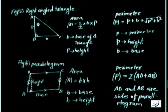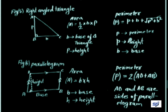The perimeter of a right-angle triangle is P = p + b + √(p² + b²), where the capital P is the perimeter, small p is the height (perpendicular), and b is the base.